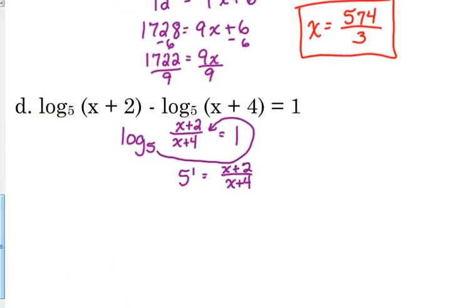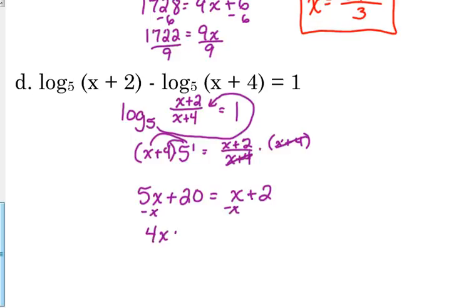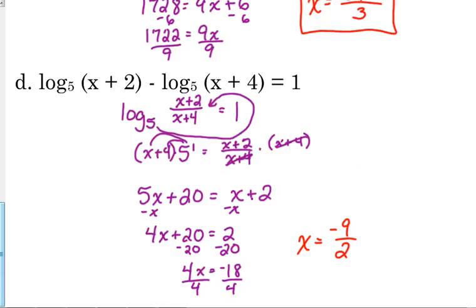Okay, the easiest way to solve this, we've got x plus 4 in the denominator. Let's multiply both sides by the denominator. I'm going to go ahead and distribute it over here on the left side. 5x plus 20 is equal to x plus 2. Solving for x. Subtract x from both sides. 4x plus 20 equals 2. Subtract 20 from both sides. 4x equals negative 18. Divide by 4. Both those numbers are divisible by 2. So, it gives us negative 9 halves.